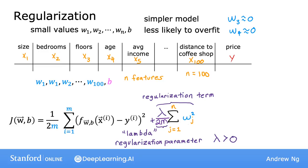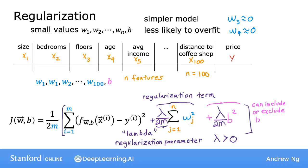Also by convention, we're not going to penalize the parameter b for being large. In practice it makes very little difference whether you do or not. Some implementations include a lambda over 2m times b squared term, but the more common convention — which we'll use in this course — is to regularize only the parameters w, not b.